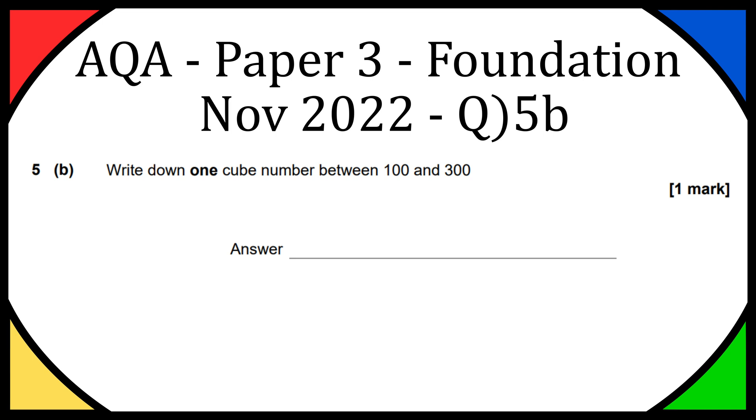So first thing we want to work out, what is a cube number? Well, a cube number is when you take a number, a whole number, and you cube it, so you times it by itself and then by itself again.